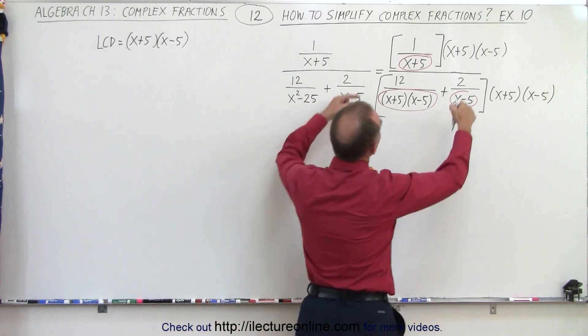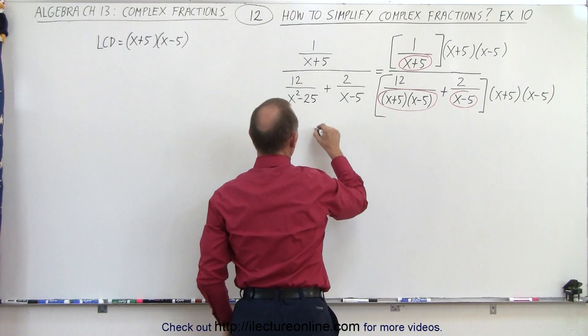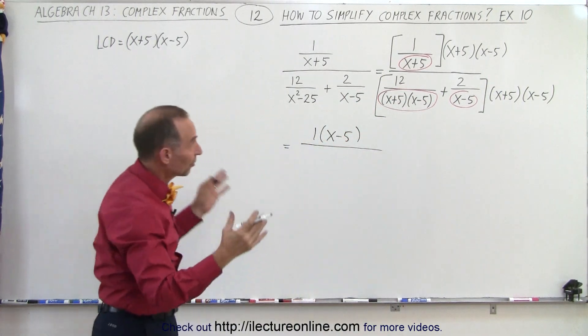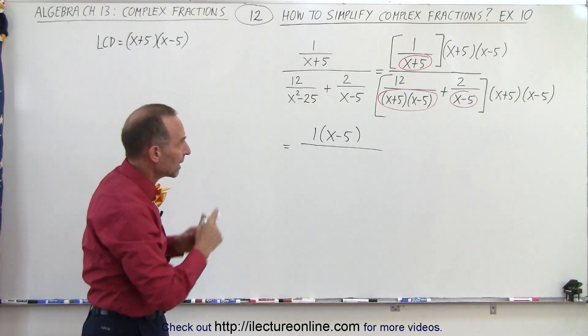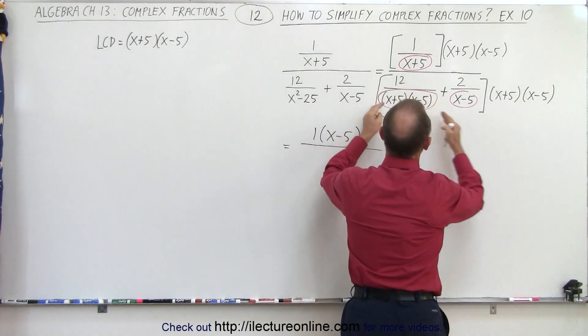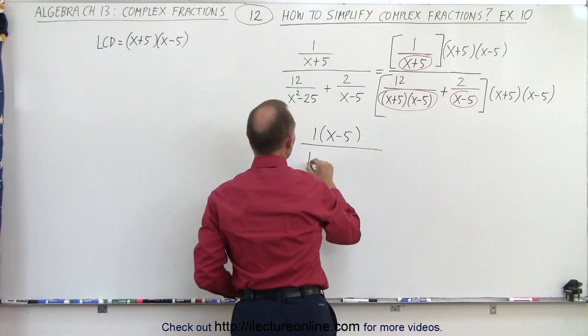Notice in the numerator, the x plus 5's cancel out, and we have 1 times x minus 5. We don't need to write the 1, but I just put it there for reference, so you can see that we multiply what's remaining after we cancel out the x plus 5's. Here, on this fraction, both x plus 5, x minus 5 cancels out, and we're left with simply a 12.